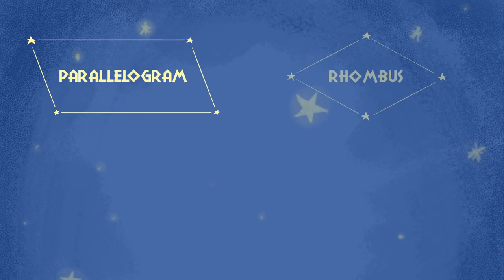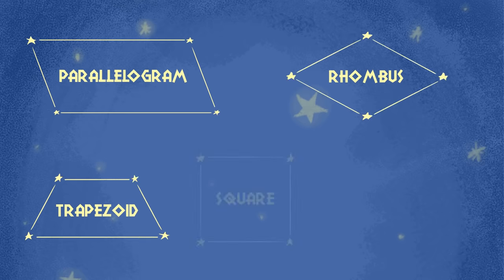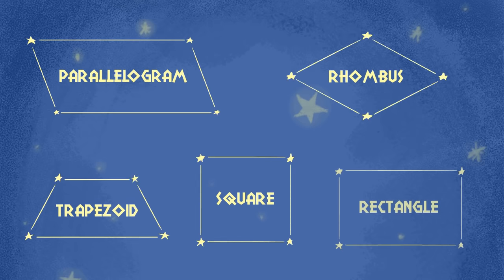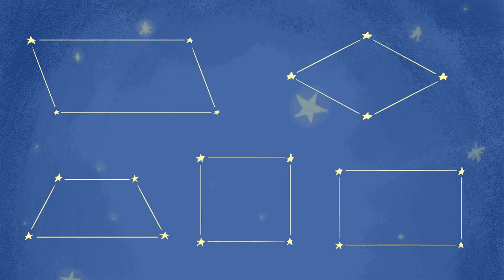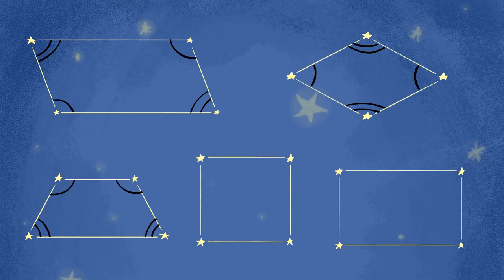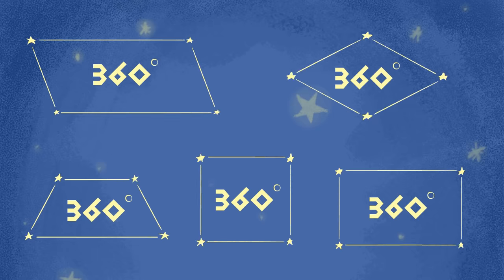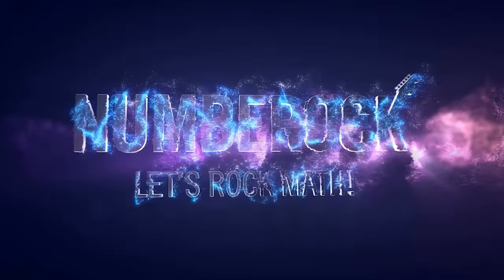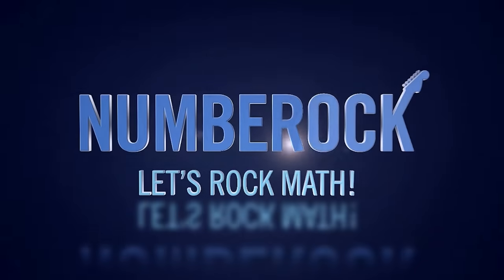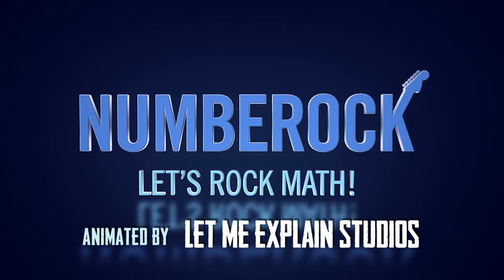Parallelograms, rhombuses, trapezoids, squares and rectangles. And if you add the angles inside each of these, there will be 360 degrees.